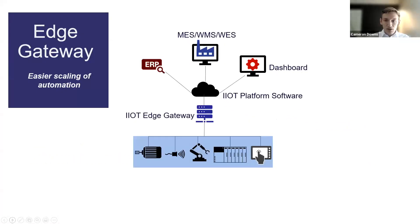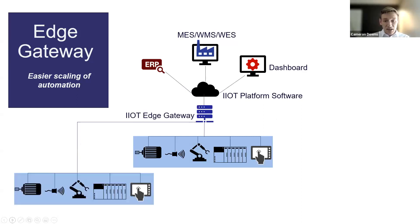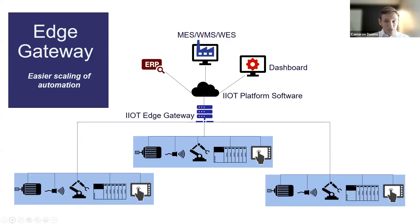Another benefit of Industry 4.0 is easy scalability. In Industry 3.0, everything is centered around a PLC, so scaling requires a lot of custom coding and changes. But when everything is centered around an edge gateway that understands automation, you're easily able to add more systems and use this edge gateway as a central automation hub for devices in your plant — even across states — to communicate and work together.